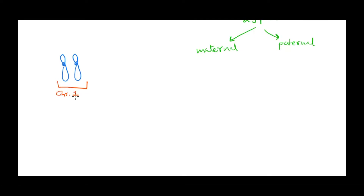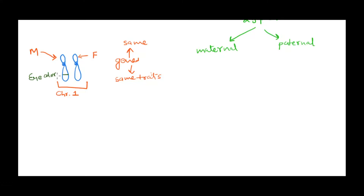For every given pair — say chromosome number one — one chromosome has come from the mother and this one has come from the father. Now both chromosome number one would have the genes that code for the same traits, and the location where these genes are present is also going to be the same. For example, hypothetically, a gene on chromosome number one codes for eye color, present somewhere here, and another gene for hair color present somewhere here.